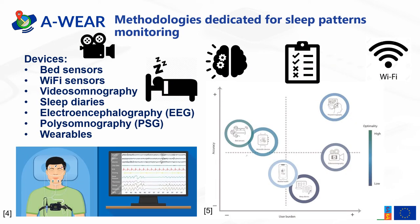For the detection of sleep disorders, many approaches have been used so far — for example, bed sensors, wearable devices including smartwatches, ultrasound, radio frequency, WiFi sensors, video somnography, sleep diaries, and electroencephalography. However, the gold standard in medical practice is considered polysomnography, which is considered the most robust medical examination nowadays. PSG can identify sleep disorders using various modalities.